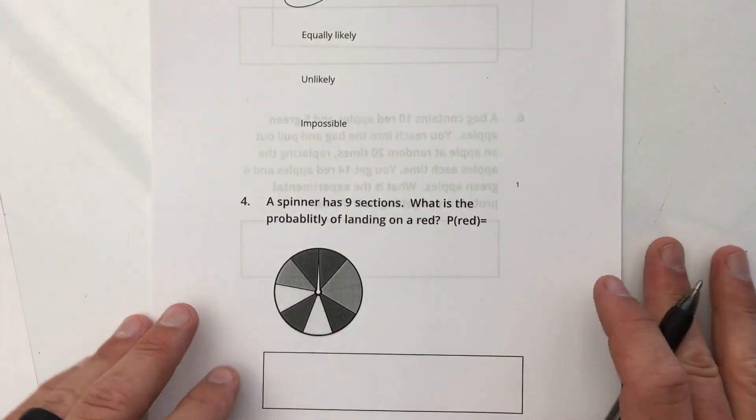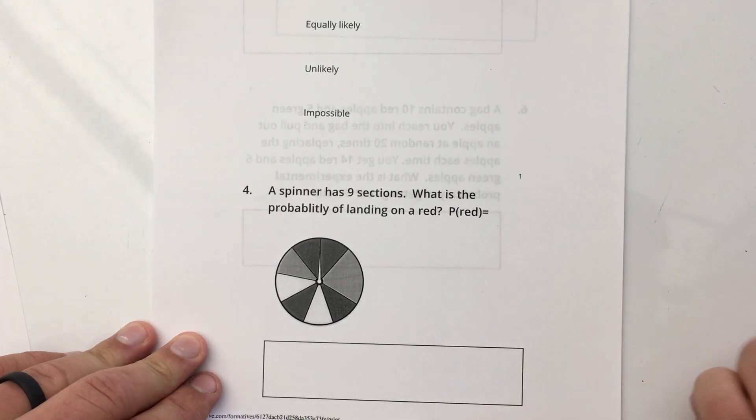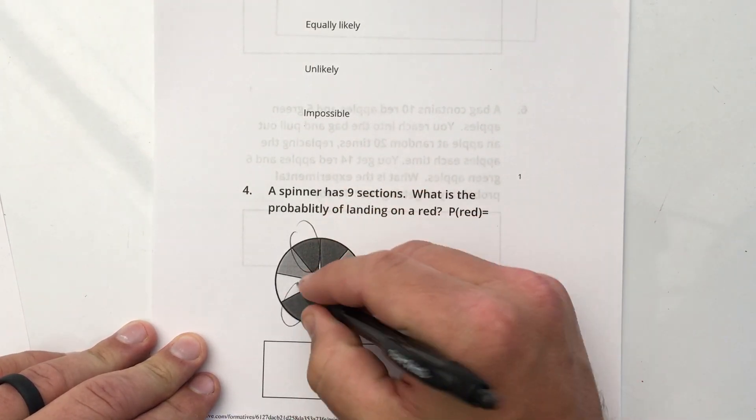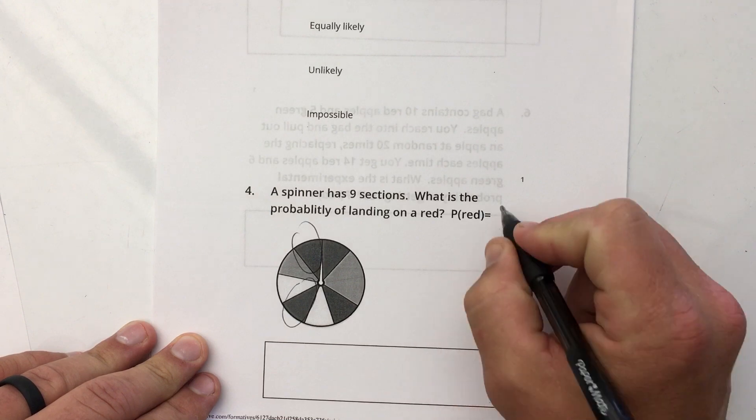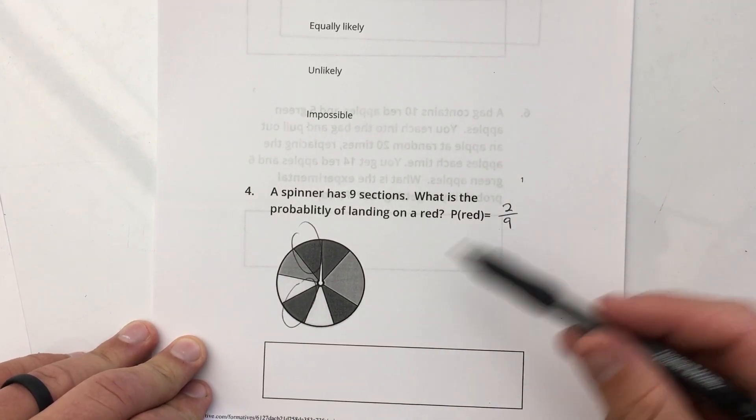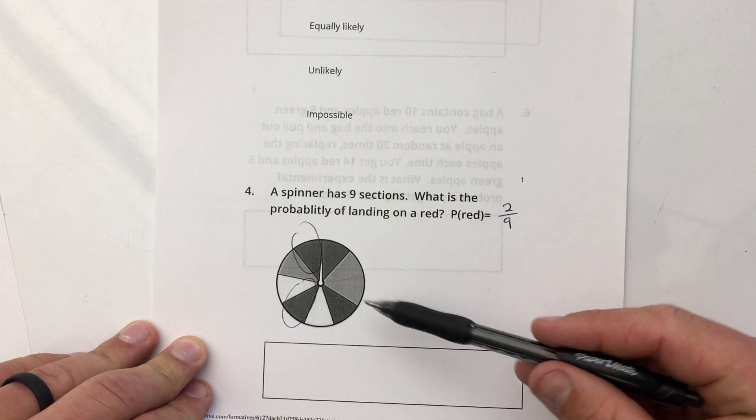Next standard, spinner has nine sections. What is the probability of landing on red? I know it's hard to tell with this, but two of them are red. I think it's this one and this one. So since there are two red and nine total, it's 2/9. And this is, by the way, theoretical probability because I'm not spinning the spinner.